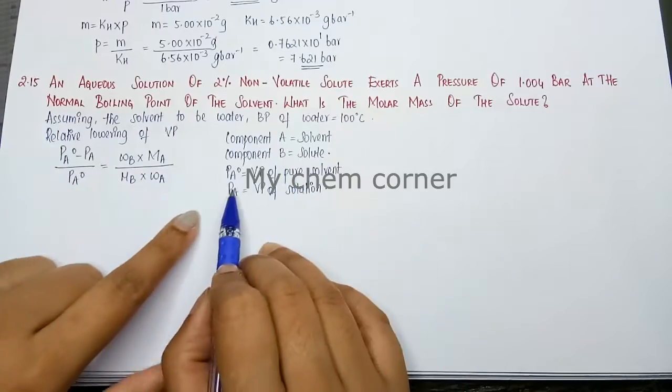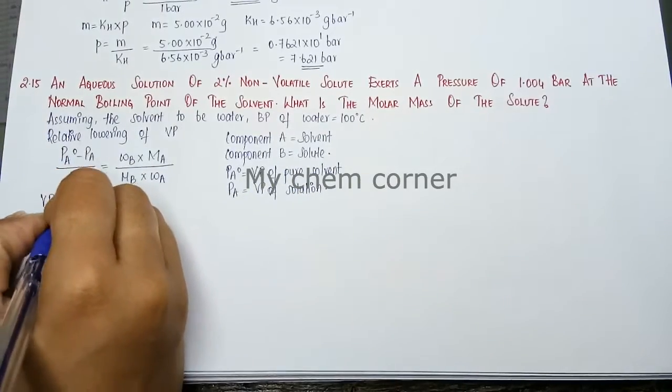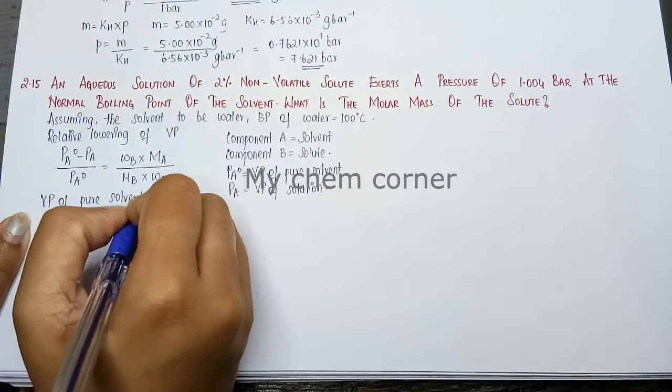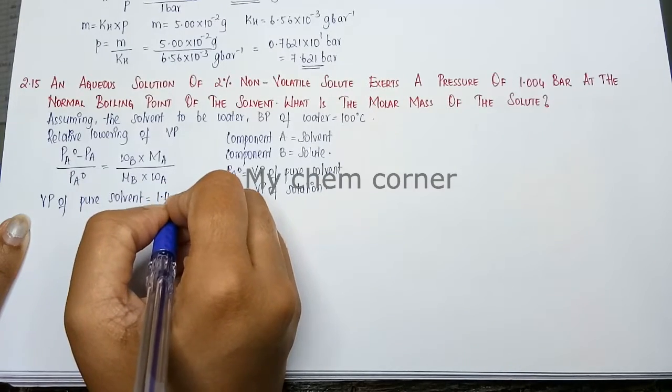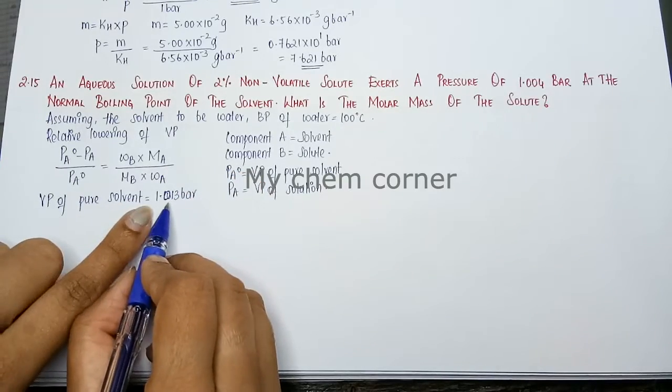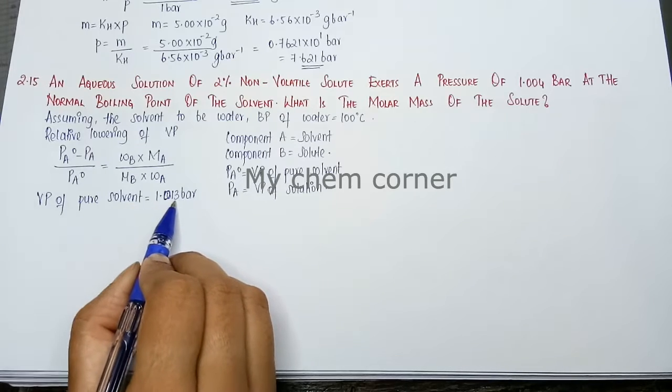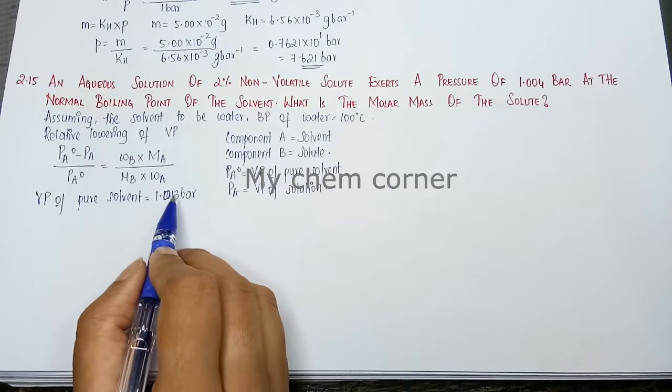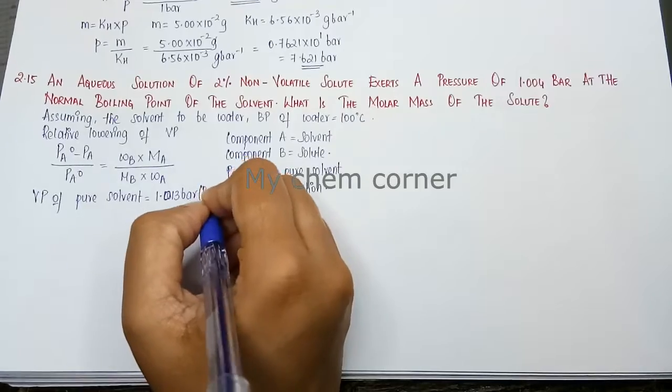So now from these values, vapor pressure of pure solvent - in this case our solvent is water. Sometimes this particular value will be given to us in the question or we will have to calculate it. We will have to memorize that vapor pressure of water is 1.013 bar. Either you memorize it or very rarely it will be given to you in the question. So this is nothing but pa0.